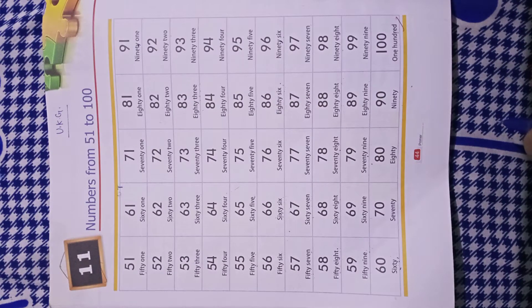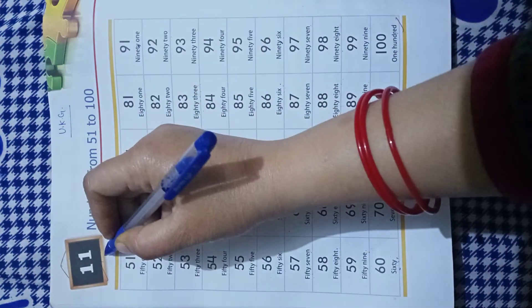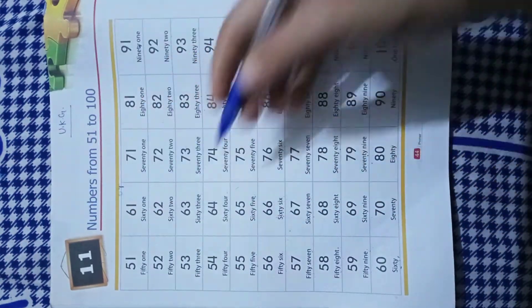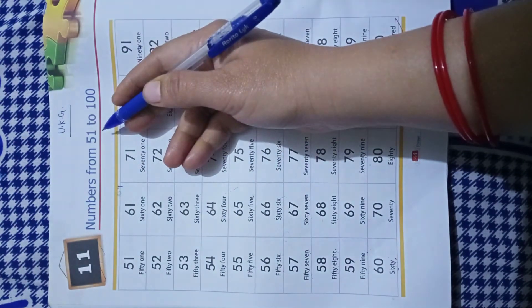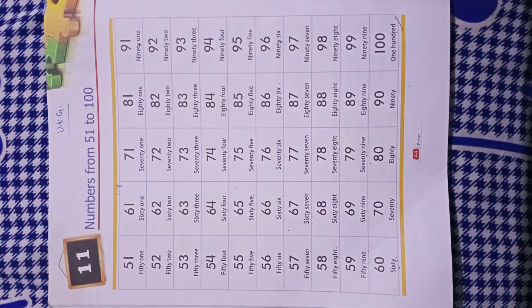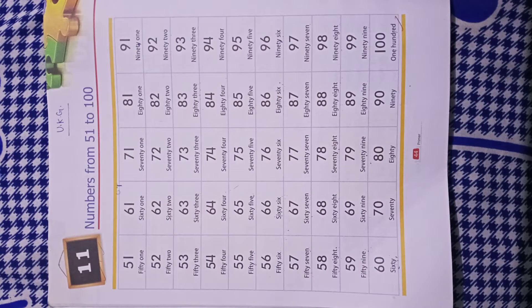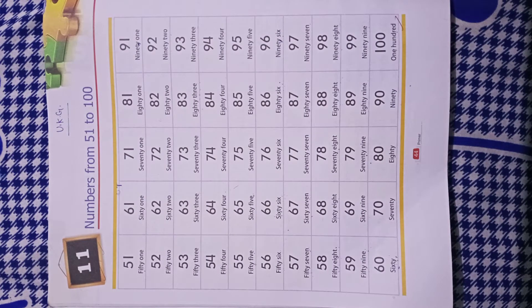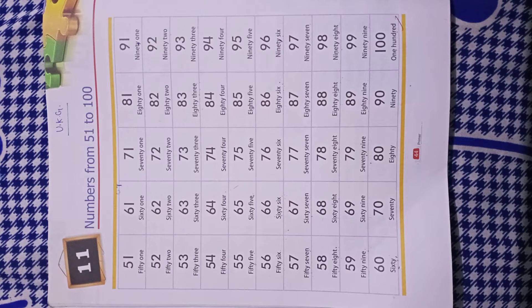Hello UKG students, today's subject is Maths, chapter number 11, topic numbers from 51 to 100. Students, I have already taught you number names 1 to 50. Today is the next part. In the next part, you will learn 51 to 100. So, let's start.